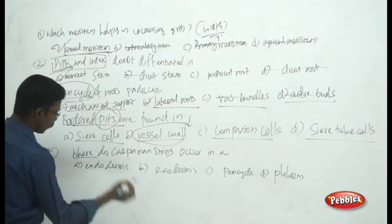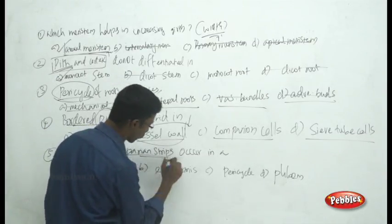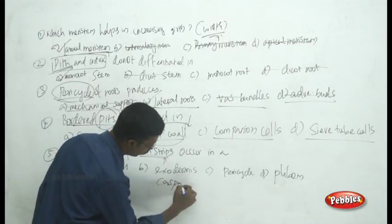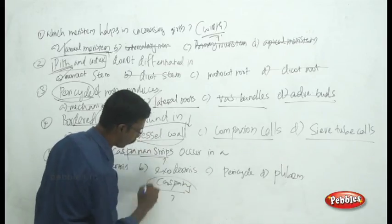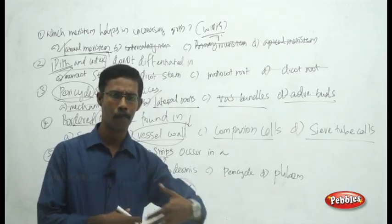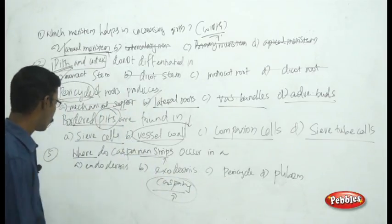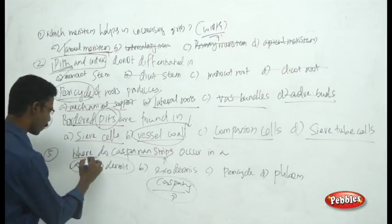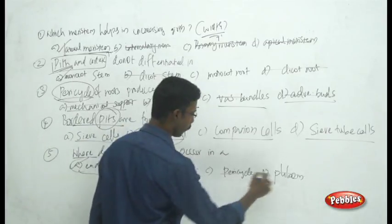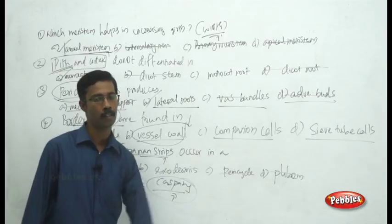Where do Casparian stripes occur? The Casparian stripe was discovered by Mr. Caspari, hence the name. This is a layer present just adjacent to the endodermis. The answer is that the Casparian stripe occurs in the endodermis. You can eliminate all remaining choices: phloem, pericycle, and exodermis.